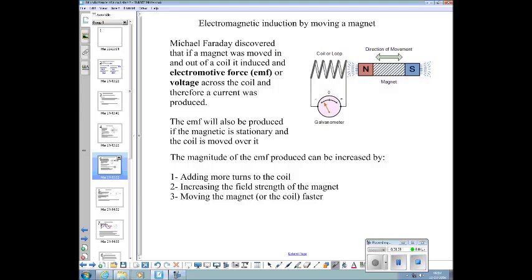Furthermore, this is electromagnetic induction by moving a magnet. Faraday discovered that if he took a magnet and moved it in and out of a coil of wire, it induced an electromotive force, or EMF for short, which is a voltage we'd measure across the coil, and therefore in a closed circuit a current would flow. The EMF will also be produced if you hold the magnet stationary and you move the coil. It doesn't matter which bit, it's the relative movement of the field around that coil.